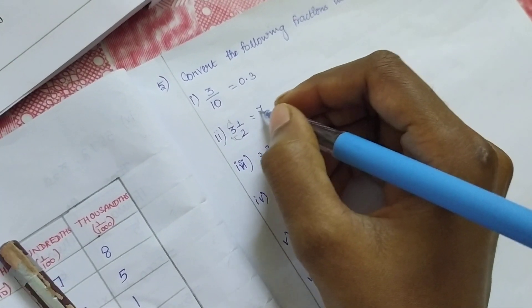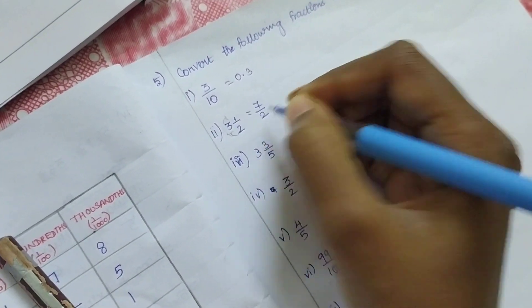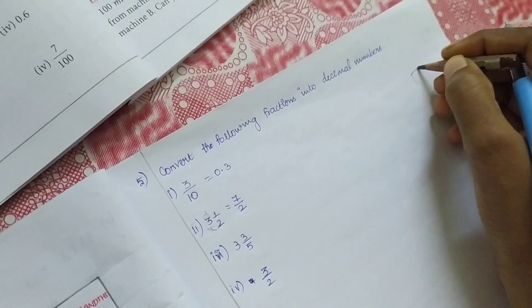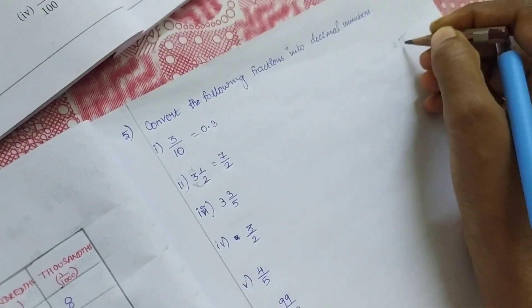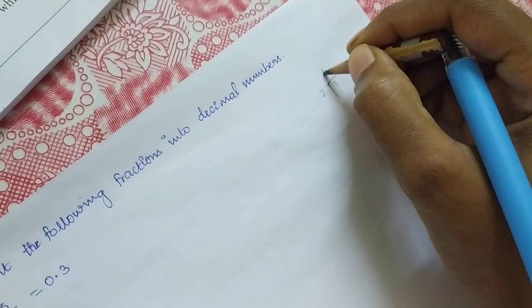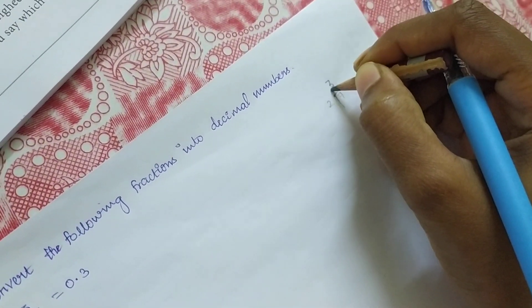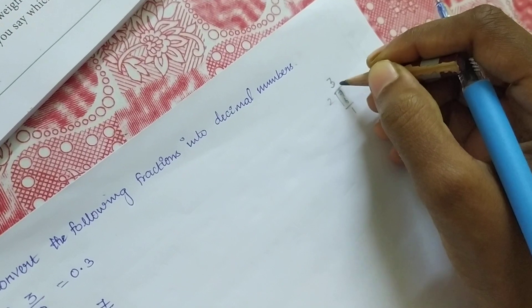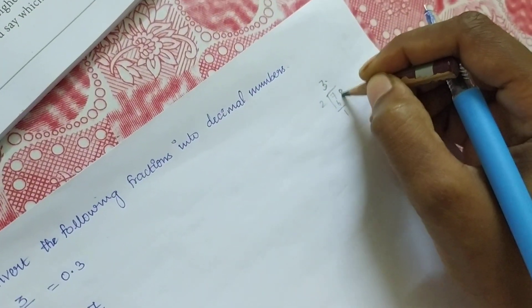So we're getting 7/2. You can divide 7 by 2. In the 2 times table, 7... 2 × 3 = 6, so the balance is 1. Put the point.